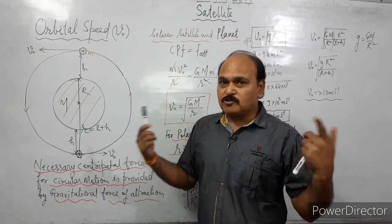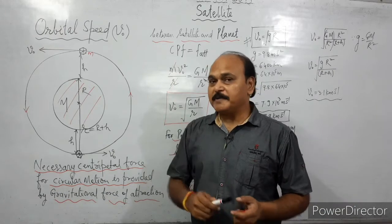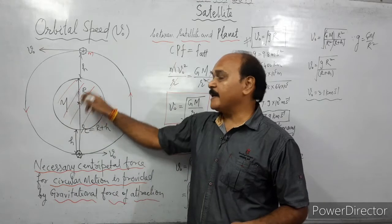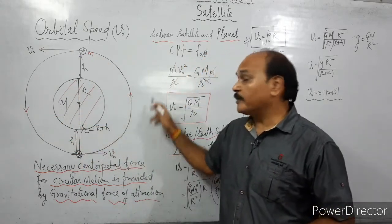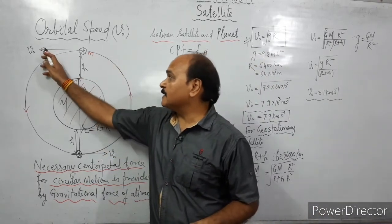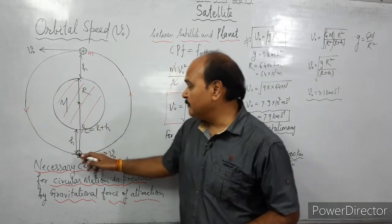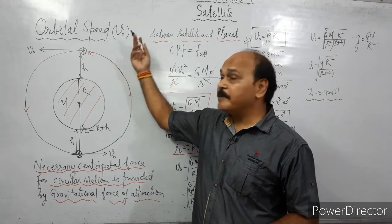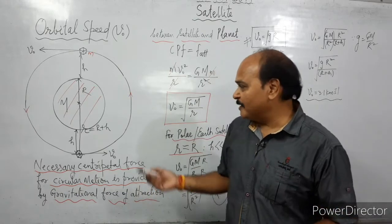Satellites are those objects which revolve around a planet. This is a planet of mass M and this is a satellite revolving around it in a circular orbit. The speed with which the satellite moves in this orbit is called its orbital speed.